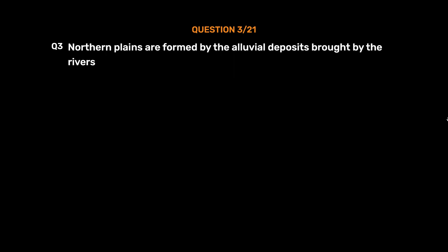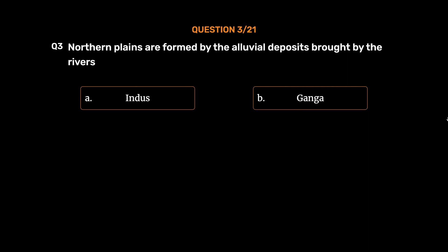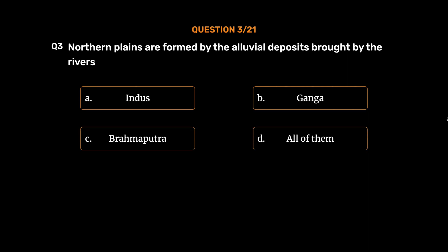Question number 3: Northern plains are formed by the alluvial deposits brought by the rivers — Option A: Indus. Option B: Ganga. Option C: Brahmaputra. Option D: All of them. The correct answer is Option D, All of them.